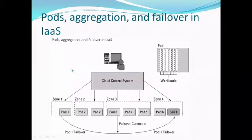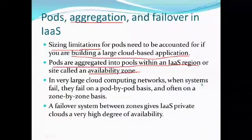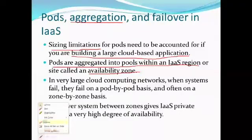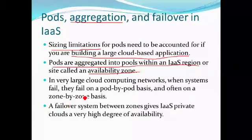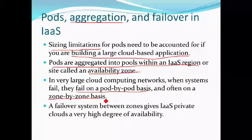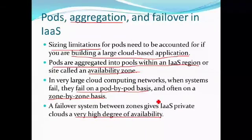What happens when we exceed the limitation? When you reach the limit of the largest virtual machine instance possible, you make a copy or clone of the instance to support additional users. If we exceed the limit, we need to create another instance of your workload so the remaining users can avail the service. These pods are managed by your cloud control system — there is a separate system to manage these pods, that is, the group of users.